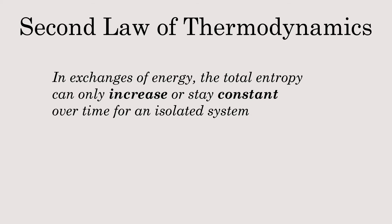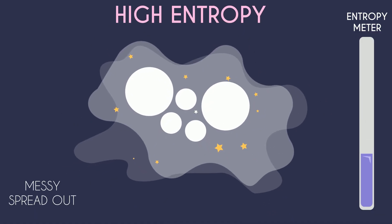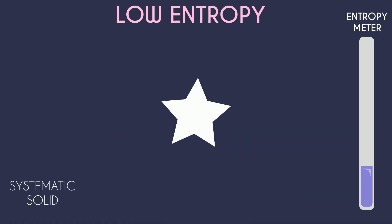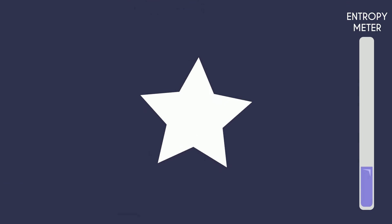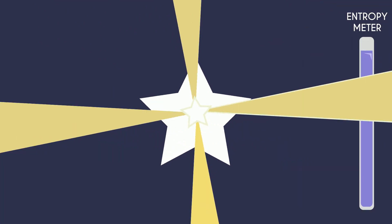The second law of thermodynamics states that in exchanges of energy in an isolated system, entropy increases or stays constant. Entropy decreases when clouds of gas condense to form stars, but increases much more when these stars release heat and light. Entropy isn't as chaotic as it seems.